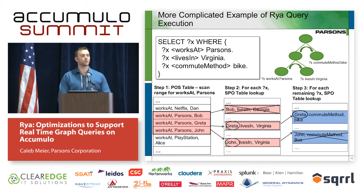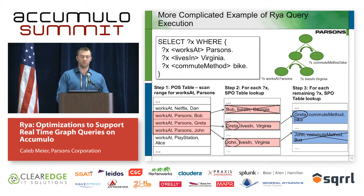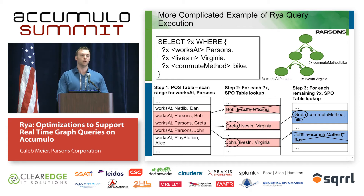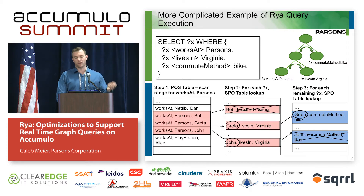To further illustrate, we add another triple pattern: X commutes method bike. We start by scanning the POS table for X works at Parsons — going top to bottom with no optimizations — and get Bob, Greta, and John. We pass those into the SPO table via lookup and find Greta and John. Then evaluating the last triple pattern by passing Greta and John into the SPO table, we find that Greta satisfies the query: she works at Parsons, lives in Virginia, and commutes via bike. Graphically, when a query is issued to RIA, it is parsed and represented as a left-leaning tree. The leftmost node on the bottom is evaluated first; those results get passed right and then up the tree.